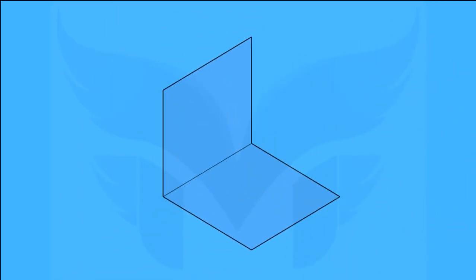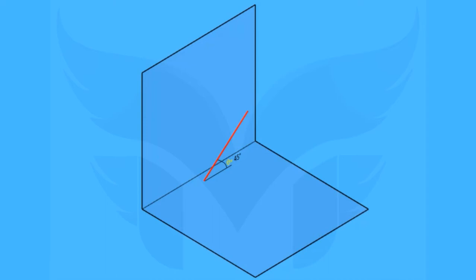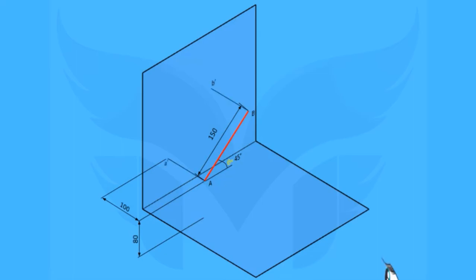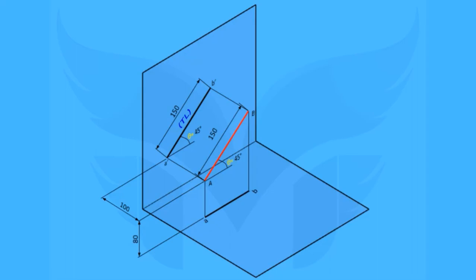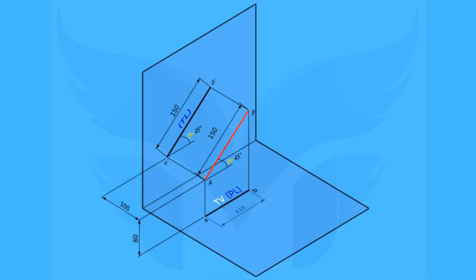Let's look at the next example of this case. There is no major difference compared to the previous one, except the line is in front of the VP rather than on the VP. Line AB is 150 mm long, A is 80 mm above the HP and 100 mm in front of the VP. For the front view, take projectors and name it A'B' — we can see a true length of 150 mm. For the top view, take projectors and plot points on the HP; here we have a top view with length shorter than true length, called the plan length, which measures 115 mm.